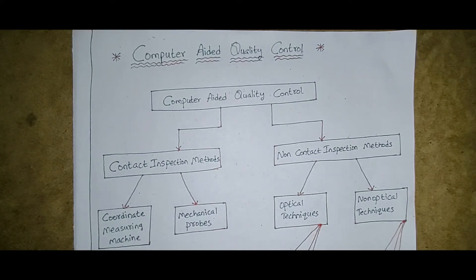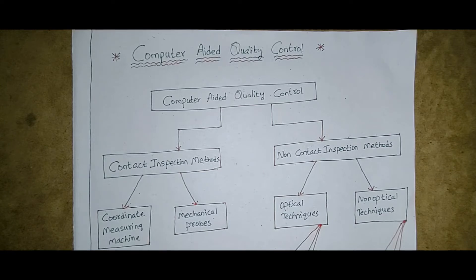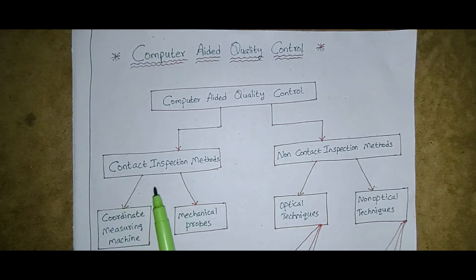Now we'll see the classification of computer-aided quality control. Computer-aided quality control is of two types: first is contact inspection methods, and second is non-contact inspection methods.